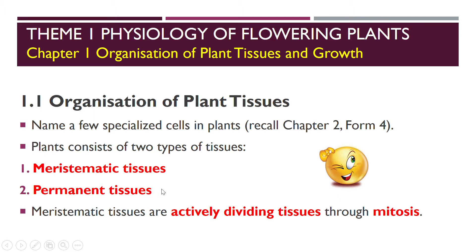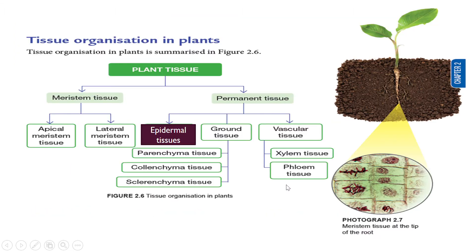So for example, can you recall? Xylem. This is the overall overview where you can see from here — plant tissues, meristem tissue, actively dividing. Ada di apex, epical. And also you have lateral meristem tissue, di tepi. So that means we'll look at it later, but the terms you can remember.